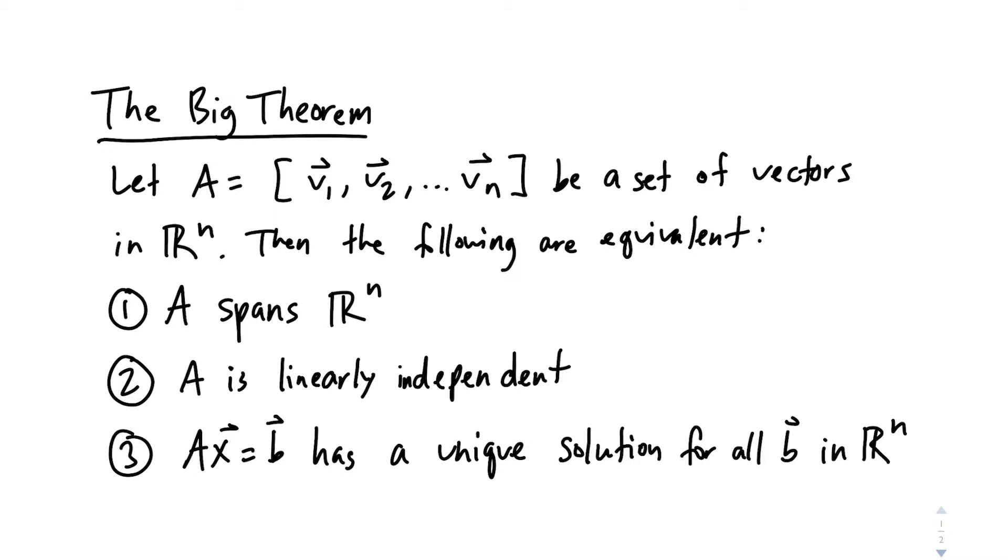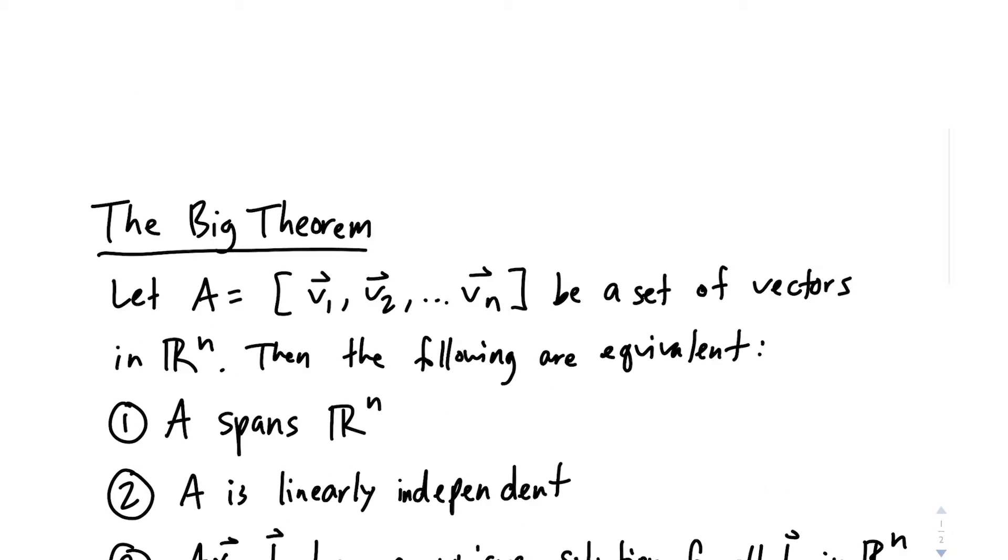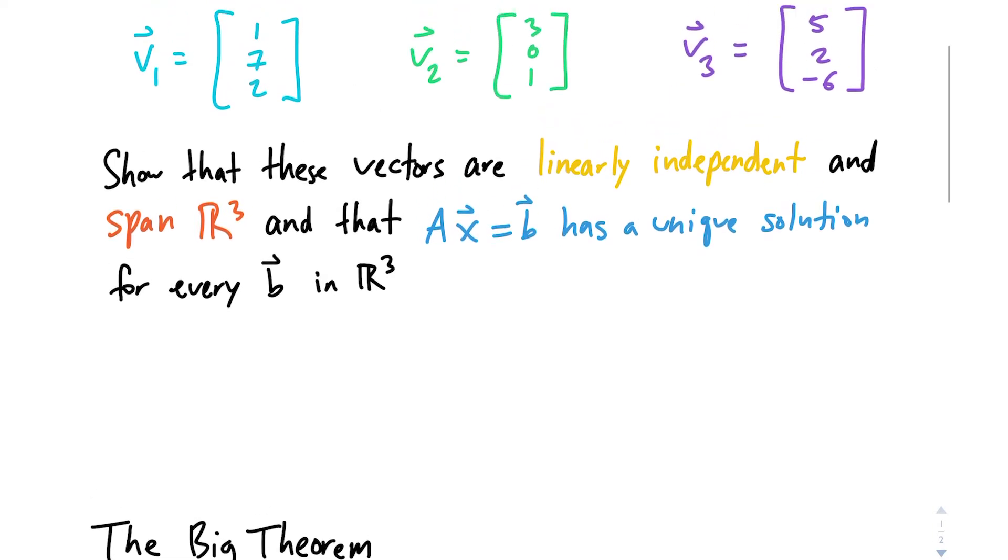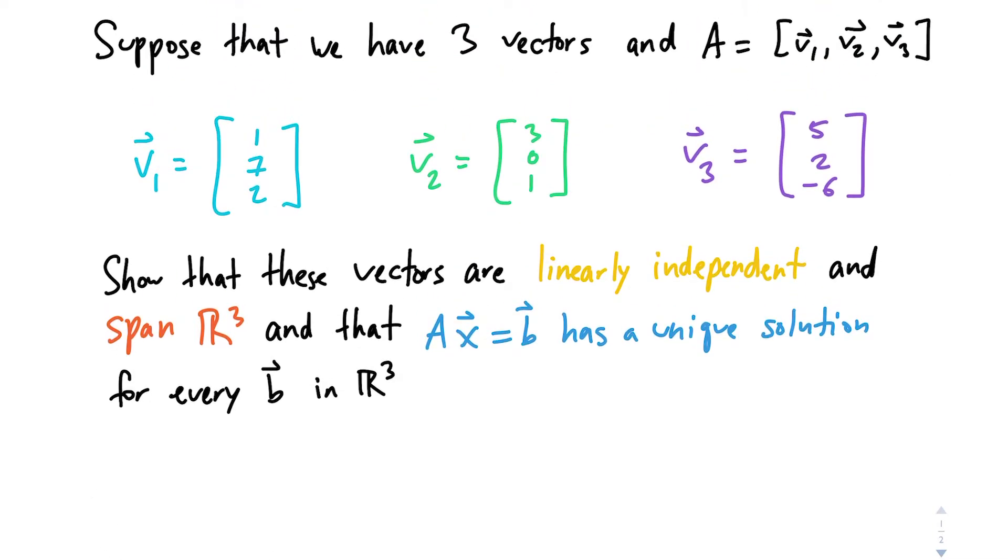So we have A spans Rⁿ, is linearly independent, and A times X equals B has a unique solution for all B in Rⁿ. So do we see any similarities between the big theorem and what we're trying to prove? Hopefully you do.